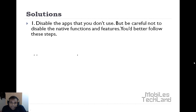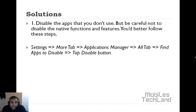It's better to follow these steps: go to Settings, then go to the More tab, then go to Application Manager, then go to the All tab, then find the apps you want to disable, then tap the Disable button.